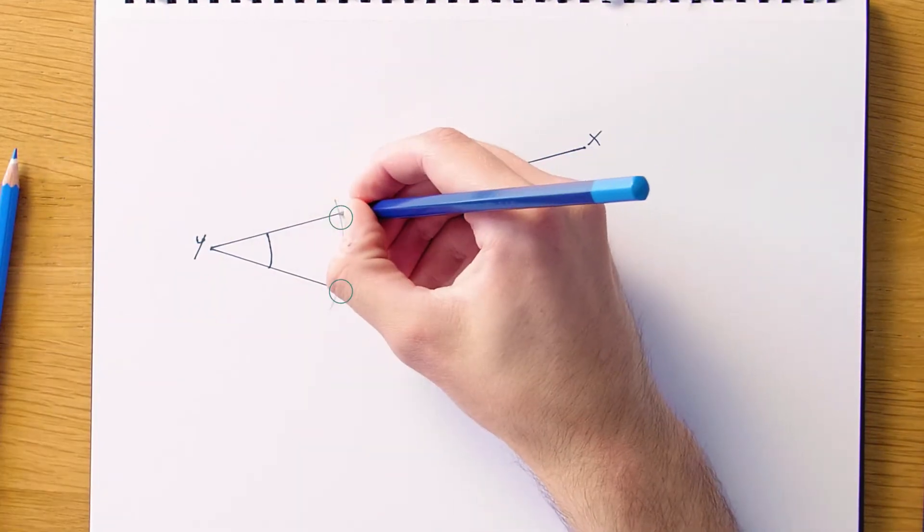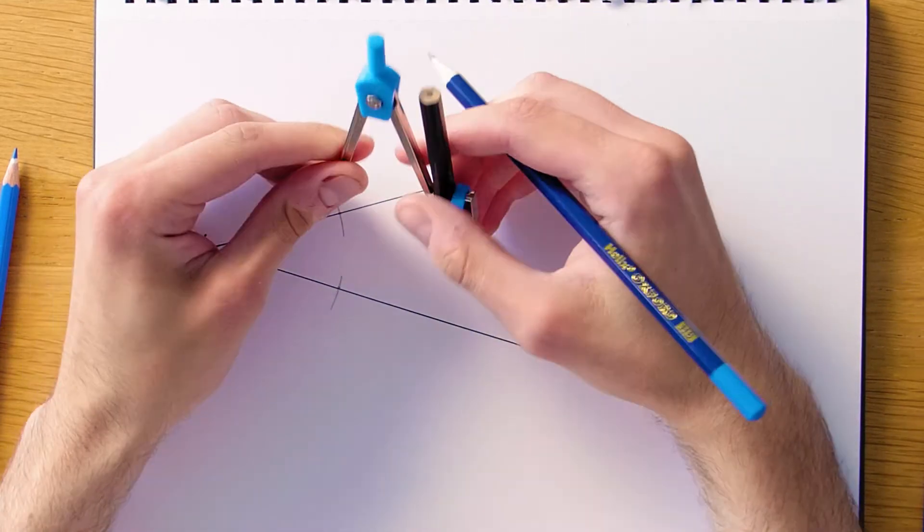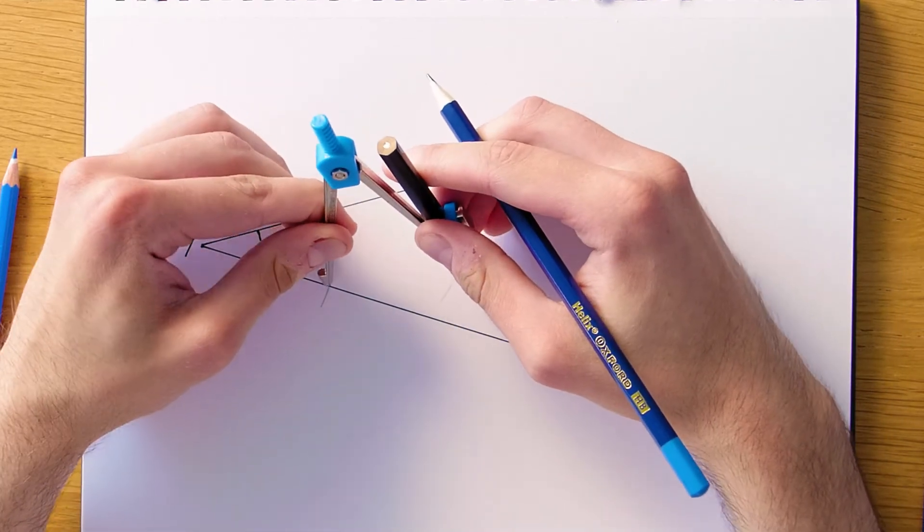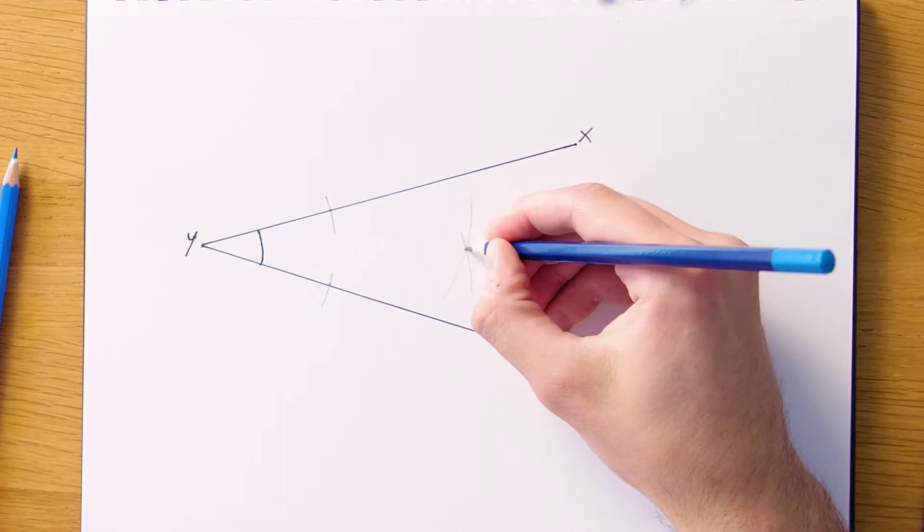So we have two new points here of intersection and from both of these points we're gonna swing again with our compass somewhere out into the middle of the angle like this and make sure both these arcs cross. And as you can see we've got a third intersect now and this is actually our point of bisection.